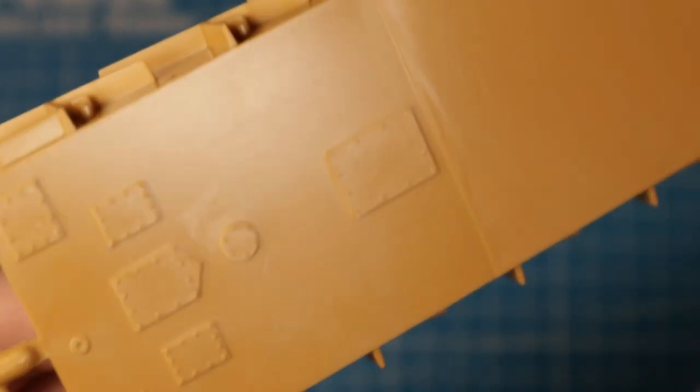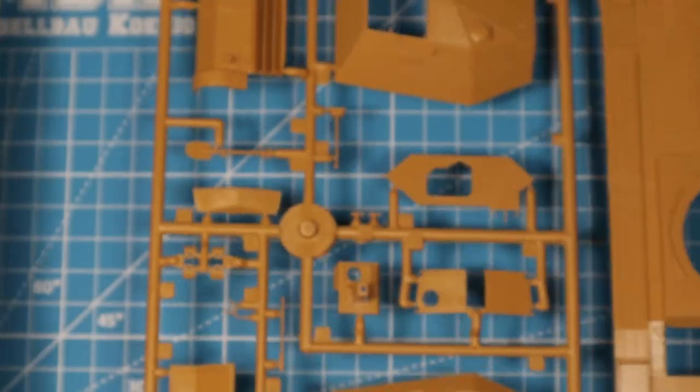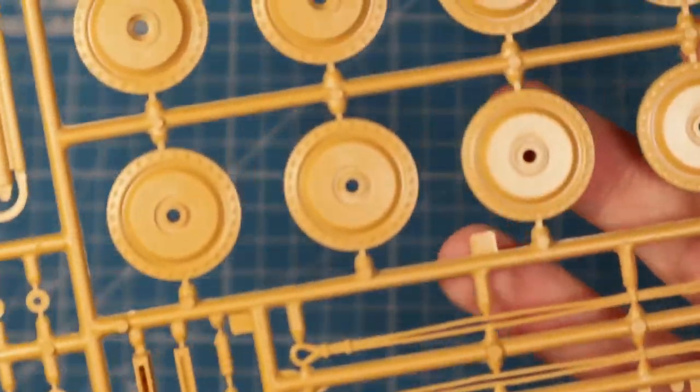The lower hull comes in one piece and has almost no details, but that is to be expected since these parts will be covered up later. The wheels and plenty of smaller parts can be found on the next sprue. The road wheels have sharp details and only a small seam line.